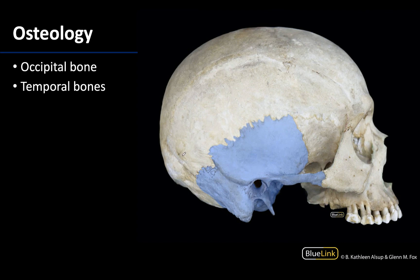Let's look at one last view of these bones. This is a lateral view and you can see the bone shaded in blue — this is going to be your temporal bone, specifically your right temporal bone. You can see quite a bit of the temporal bone from the lateral view: a fairly nondescript superior area with increasing complexity the more inferior you get. And there's that bony bump of the occipital bone, so your occipital bone is here-ish.